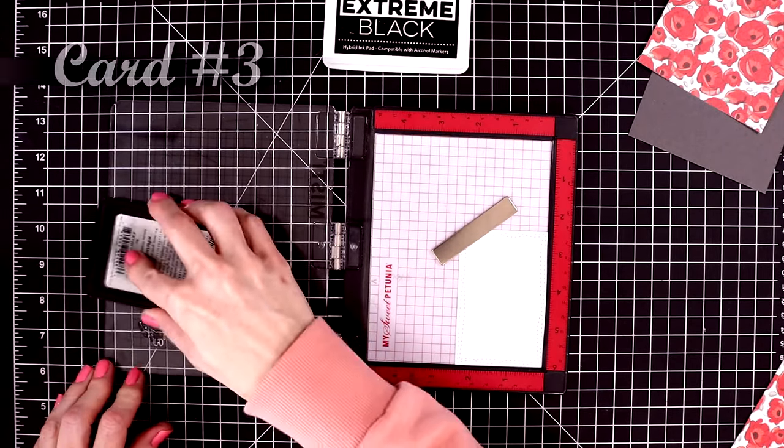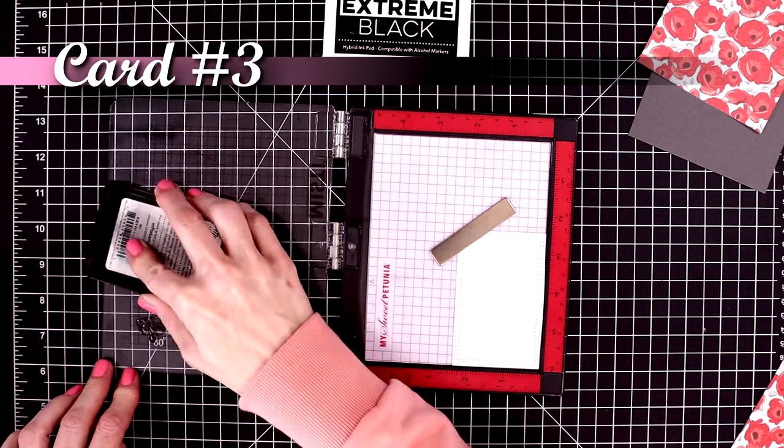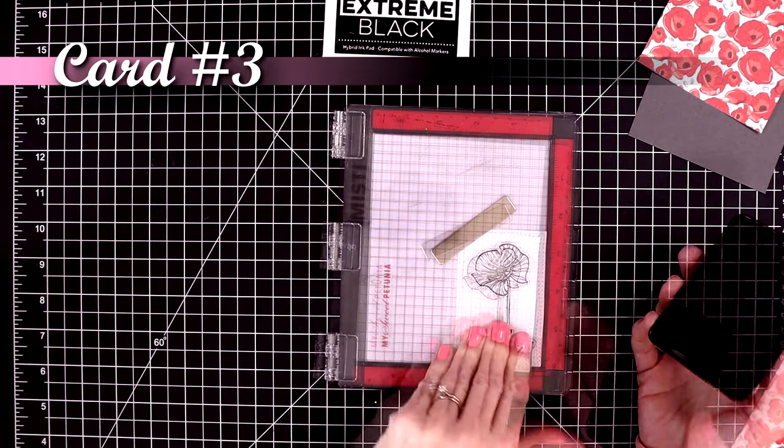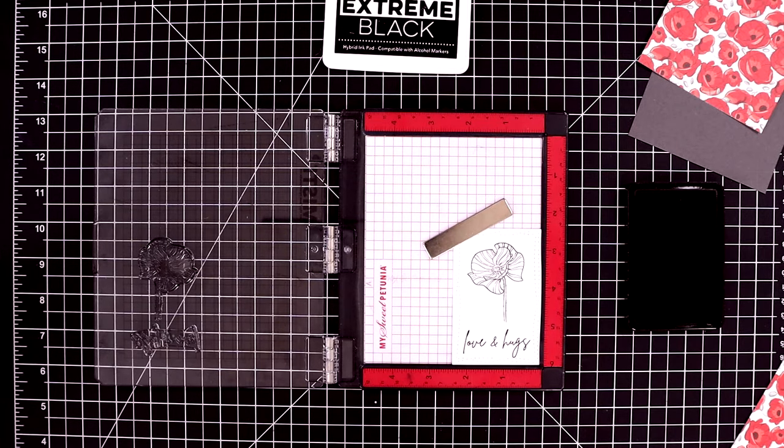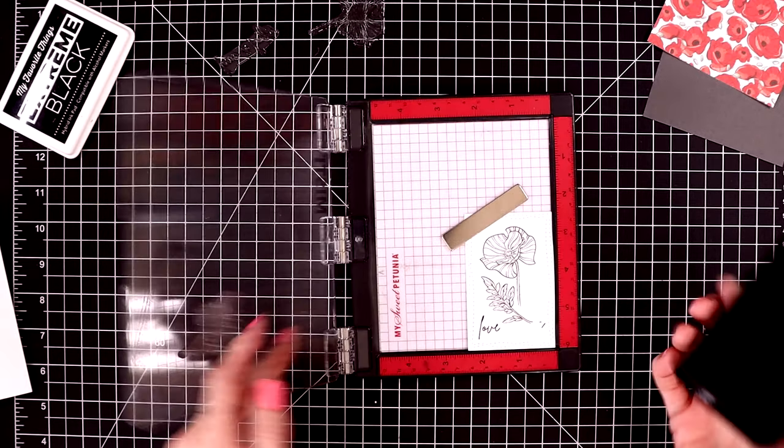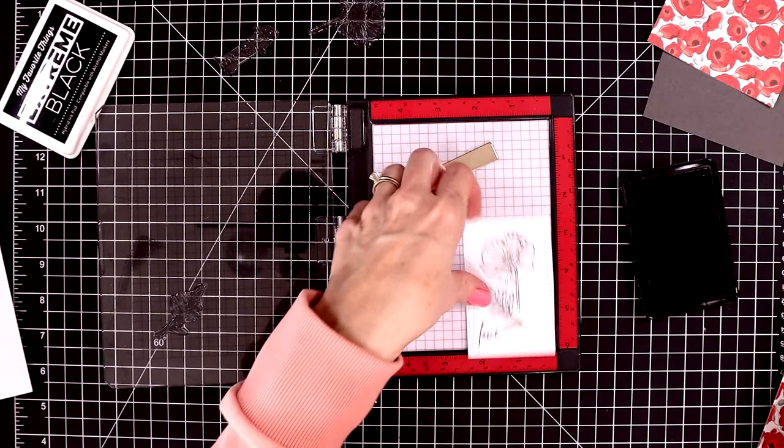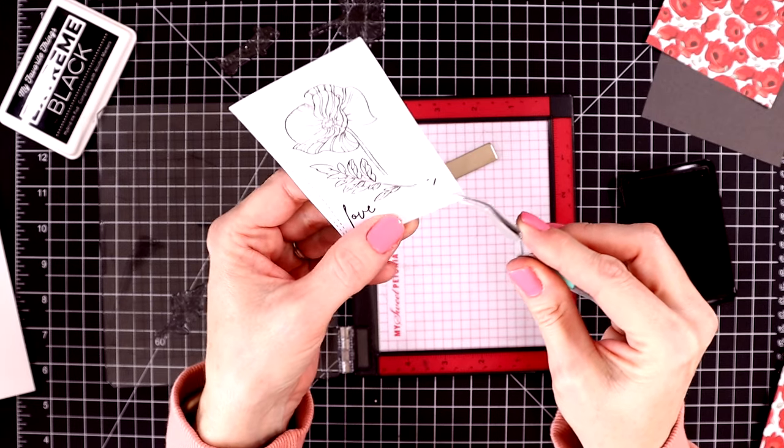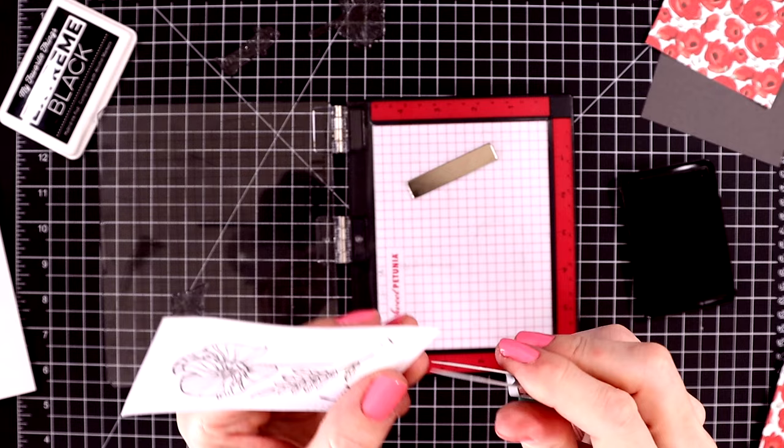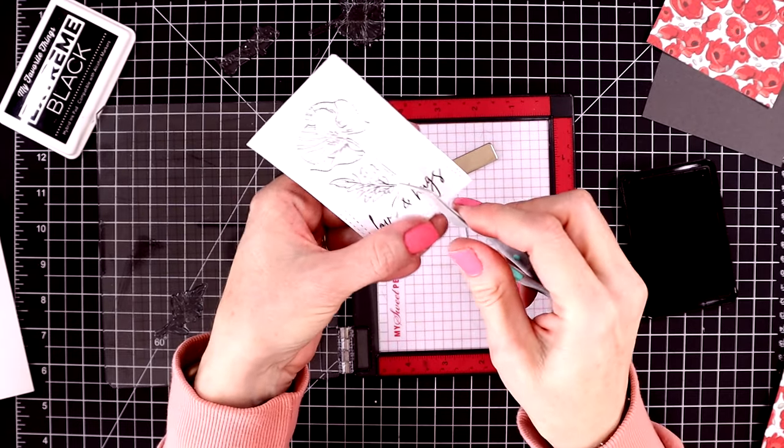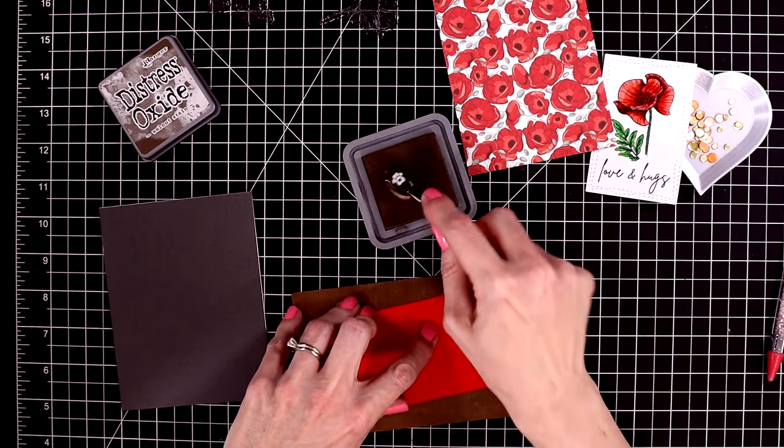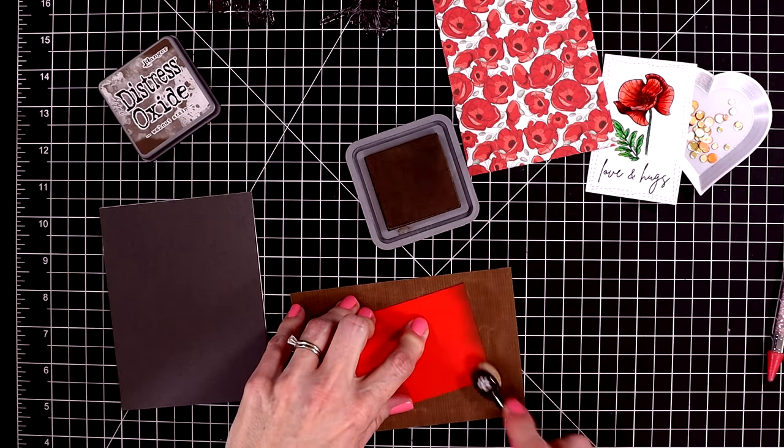For card number three, I'm going to do a little bit of Copic marker coloring. So I'm stamping these out with some Copic-friendly ink. This is extreme black ink from My Favorite Things. Although Spellbinders has a very similar ink. And it is just called Intense Black Ink. I protected my sentiment with a piece of masking paper. So that I could stamp one of the leaves next to the poppy. And this little panel is ready to go. I cut it out with a wonky stitch rectangle die.